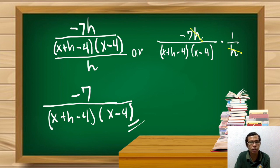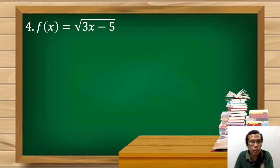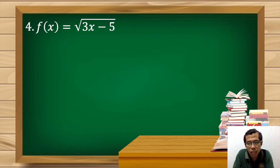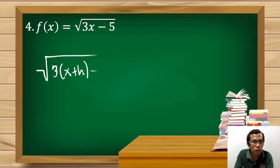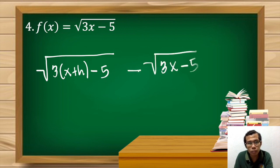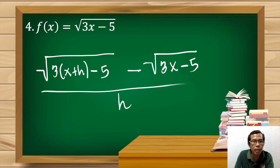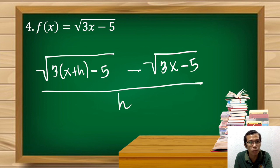For our last example we have a radical function: f(x) = √(3x−5). Don't worry, this is one of the simplest problems. We apply the same rule and replace x with x+h, giving √(3(x+h)−5) minus √(3x−5), divided by h. As you can see, we have no common terms on each radical side, so we cannot simplify the numerator further, and the denominator is already simplified.